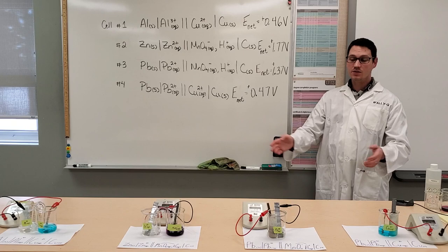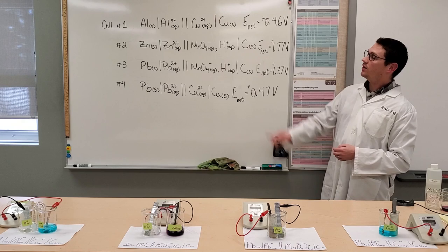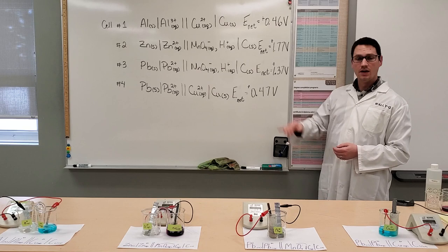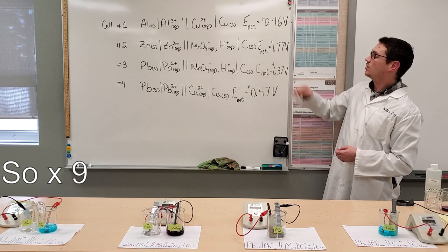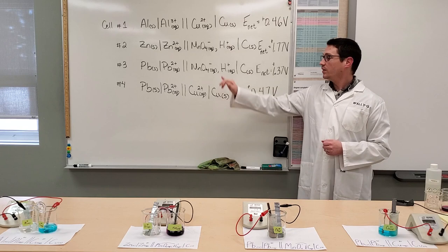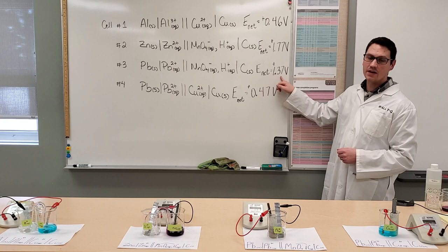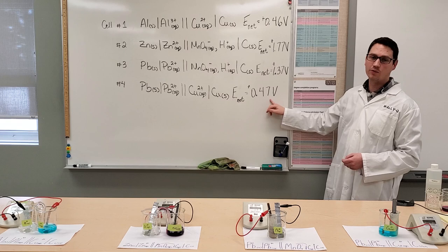And we've taken a snapshot of what they look like in the cell potentials. For our first cell, the aluminum and copper cell, we had a potential of 0.46 volts. For the second cell, the zinc and acidified permanganate, remember that's the one with the inert electrode because it doesn't have a solid electrode paired up with it. So it produced a voltage of 1.77 volts. For the third cell, the lead and acidified permanganate, the one in the porous cup here, positive 1.37 volts. And then for the lead and copper, we had a cell potential of 0.47 volts.